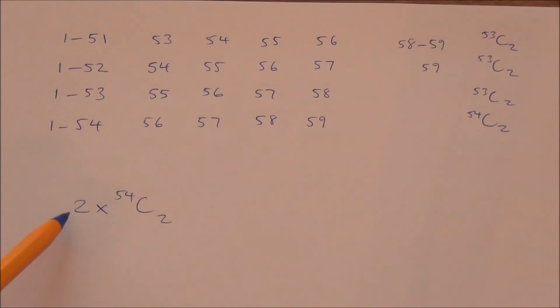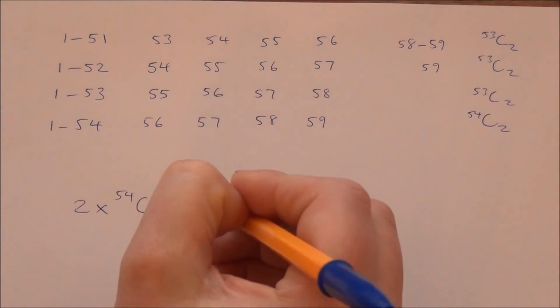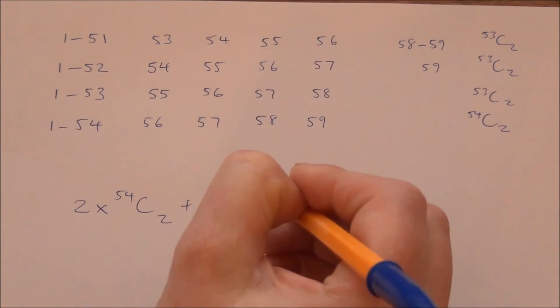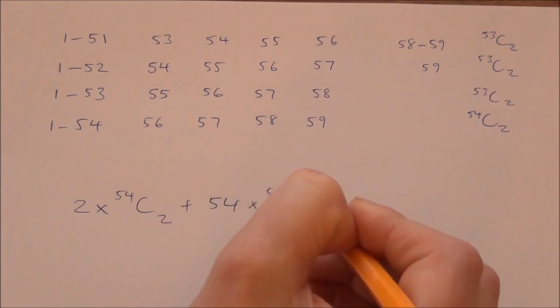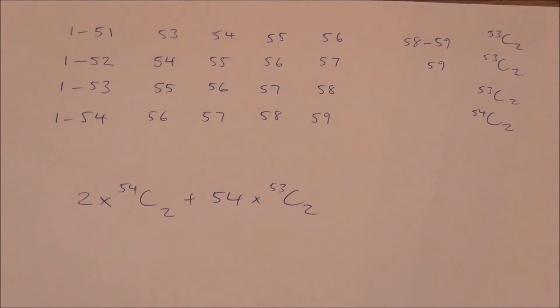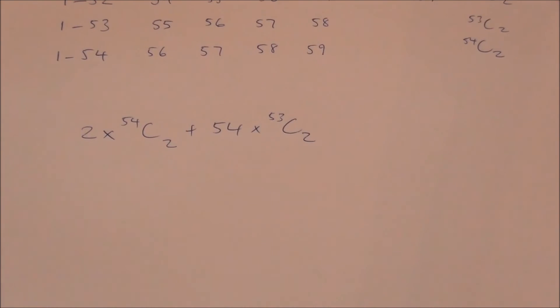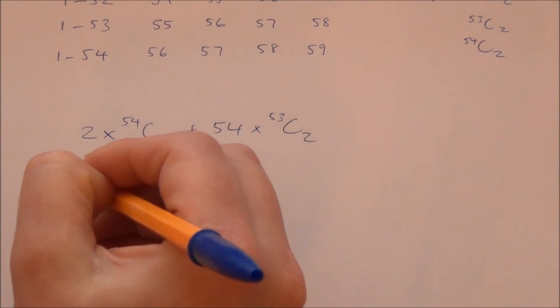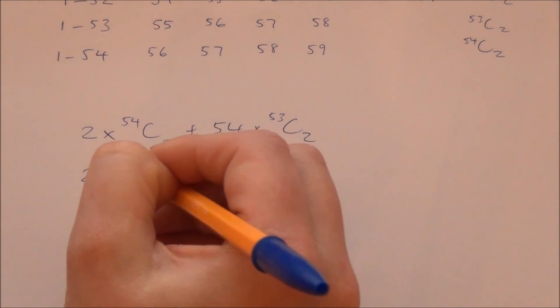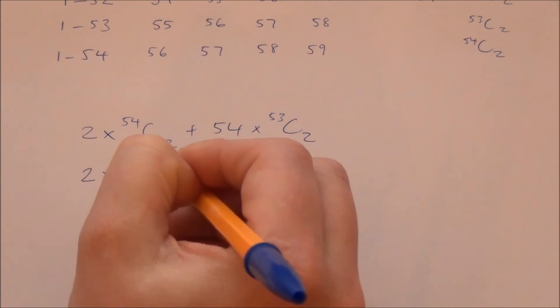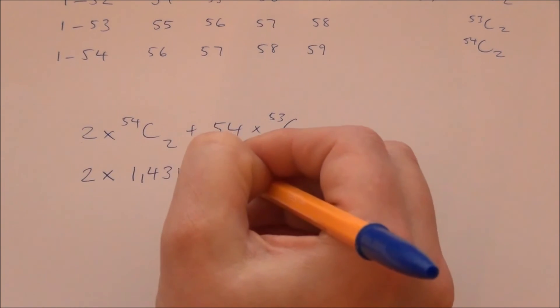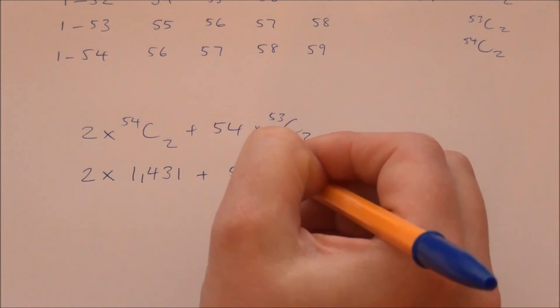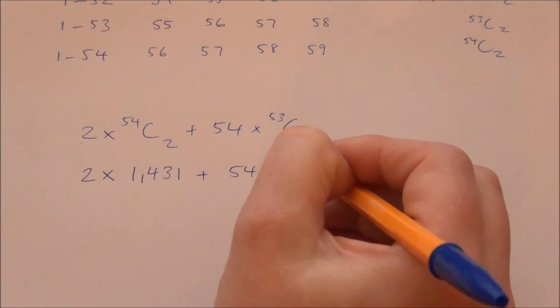Two of those have 54, so we've got 54 times 53 choose 2. Now, if we plug some numbers in there,